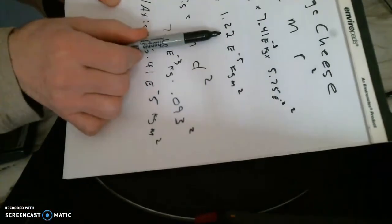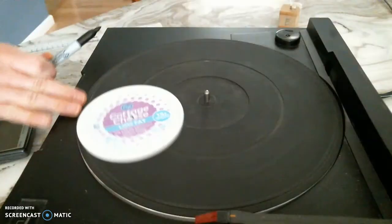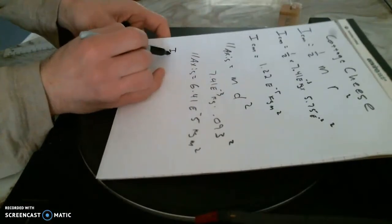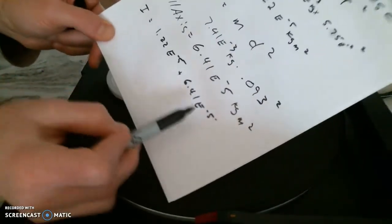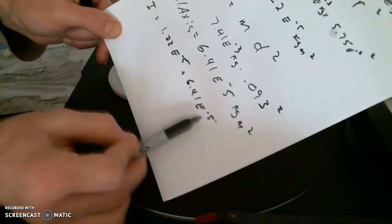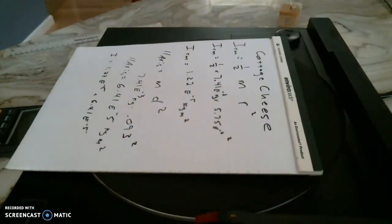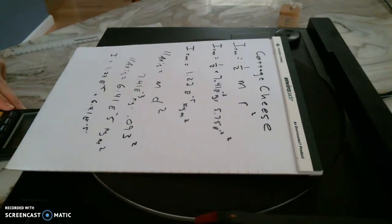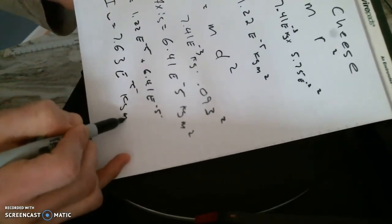So there's the I about the center of mass: 1.22E-5. There's the I that is the parallel axis: 6.41E-5. When this sucker is going in circles around there, I have to add the two I's. So I push the plus button: 1.22E-5 plus 6.41E-5. You see how those numbers are exponentially the same — E-5 and E-5. Pushing plus gives 7.63E-5 kilogram meters squared. That is the total parallel axis I for the cottage cheese lid.